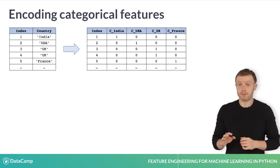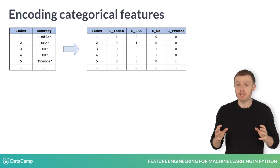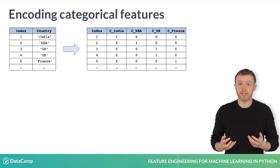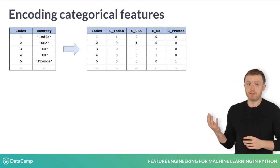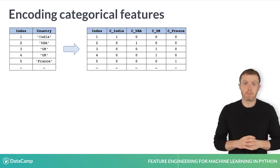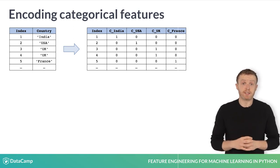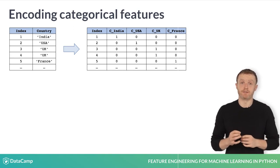Instead, values can be encoded by creating additional binary features corresponding to whether each value was picked or not, as shown in the table on the right. In doing so, your model can leverage the information of what country is given without inferring any order between the different options.